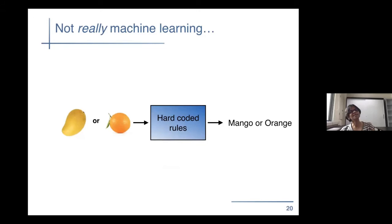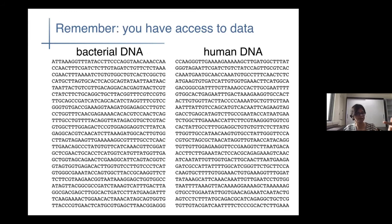But this is not really machine learning yet, because I already told you about the rules — bacterial DNA is AT-rich, human is not. So really, you want to figure out what those distributions are from your data. You have a lot of bacterial data and human data. How then can you come up with those rules? Let's go back to the coin because that's a little easier to handle.